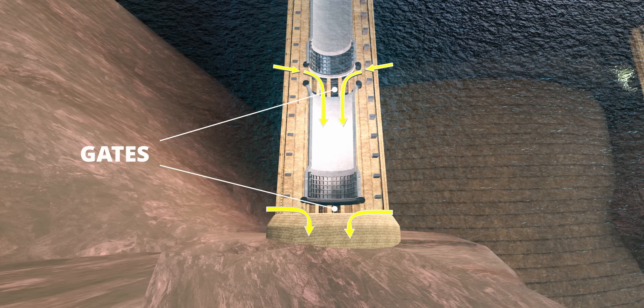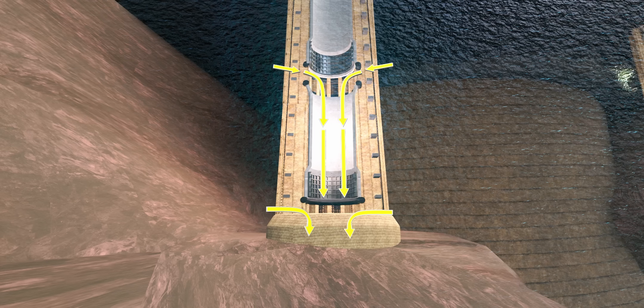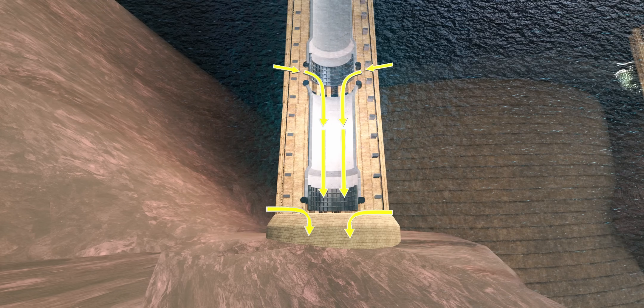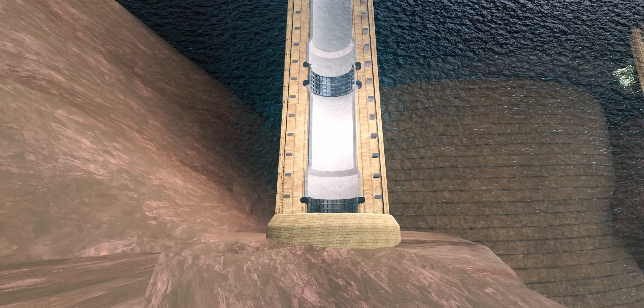Each intake tower is equipped with two gates. You can see the way water flows when the gates are open. Interestingly, the operators can close these gates and block water flow for the maintenance of penstock or turbines.